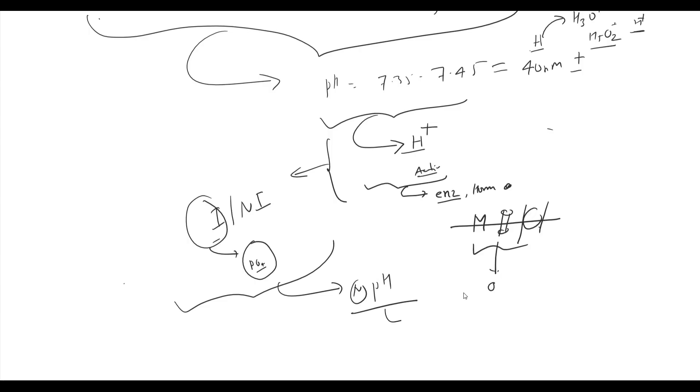pH is maintained by body buffers. Buffers are substances that resist pH change. Power of buffer systems is measured in buffer value: the amount of acid or base added to 1 liter of system to change pH by 1 unit. Its unit is slykes.